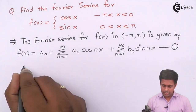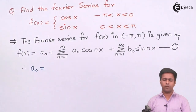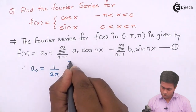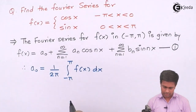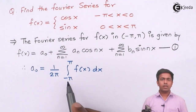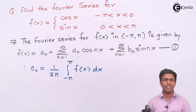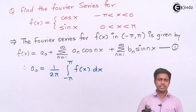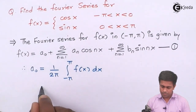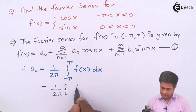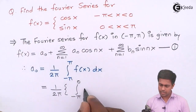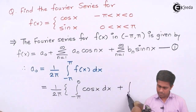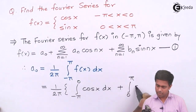Let's start. a₀ equals 1/(2π) times the integral from -π to π of f(x) dx. This range is divided into two parts: -π to 0, and 0 to π, with different values of f(x) in each. So we split it: a₀ = 1/(2π) [integral from -π to 0 of cos(x) dx + integral from 0 to π of sin(x) dx].